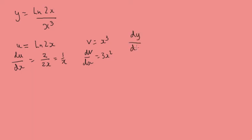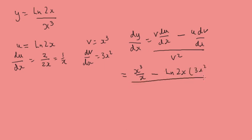Now the quotient rule is v du by dx minus u dv by dx all over v squared. So that's going to be v is x cubed times du by dx, so it's going to be 1 over x minus u which is log of 2x times dv by dx which is 3x squared all over v squared, which is x cubed squared, which is going to be x to the power of 6.